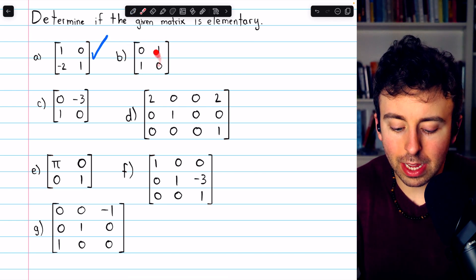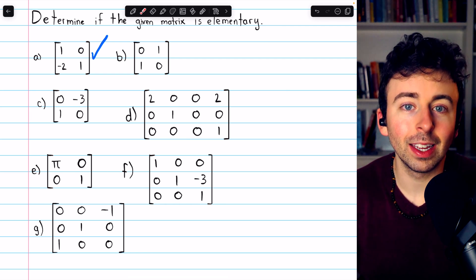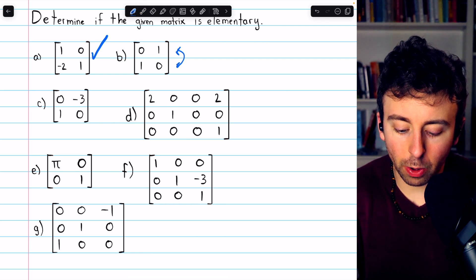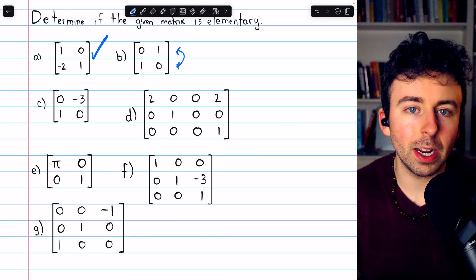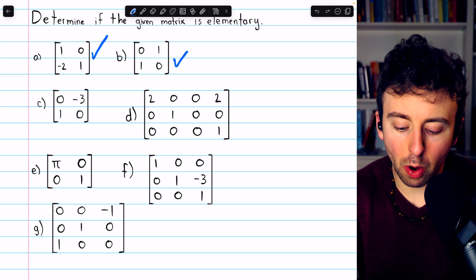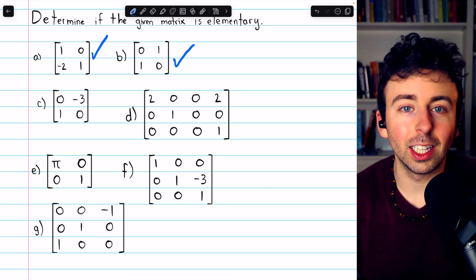Onto matrix B, is this matrix elementary? Yes, this one is as well. All that happened is the rows were swapped in the identity matrix. Row 1 and row 2 were swapped. That's one elementary row operation. So this is an elementary matrix.